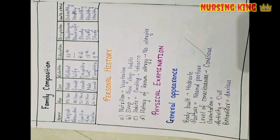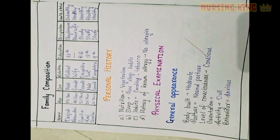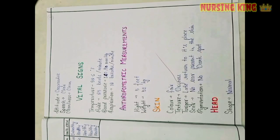After that, you have to write regarding the family history — the family tree and family composition — how many members are in the family, like father, mother, wife, and so on. Then personal history.